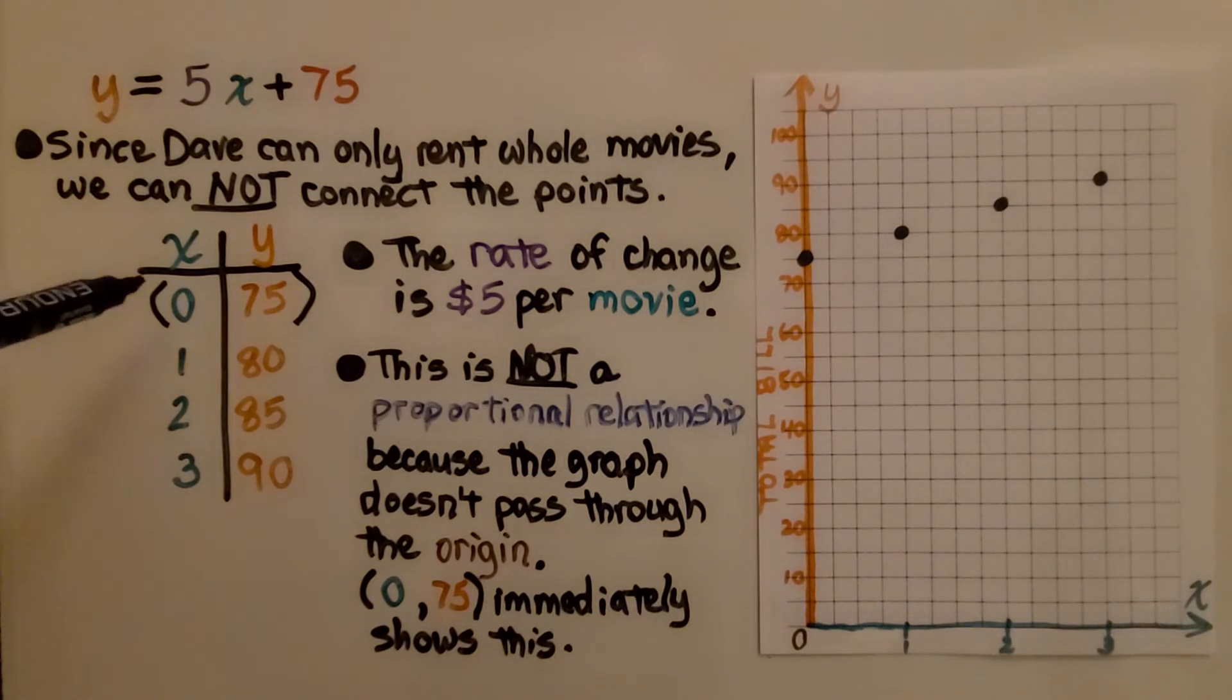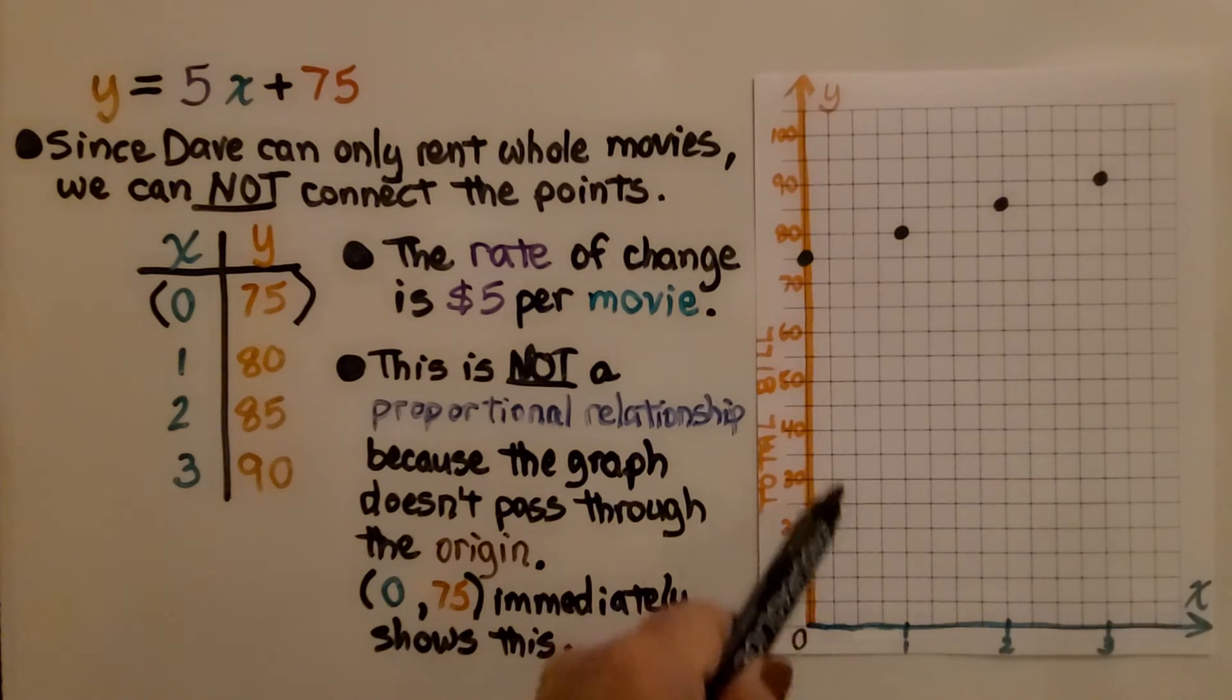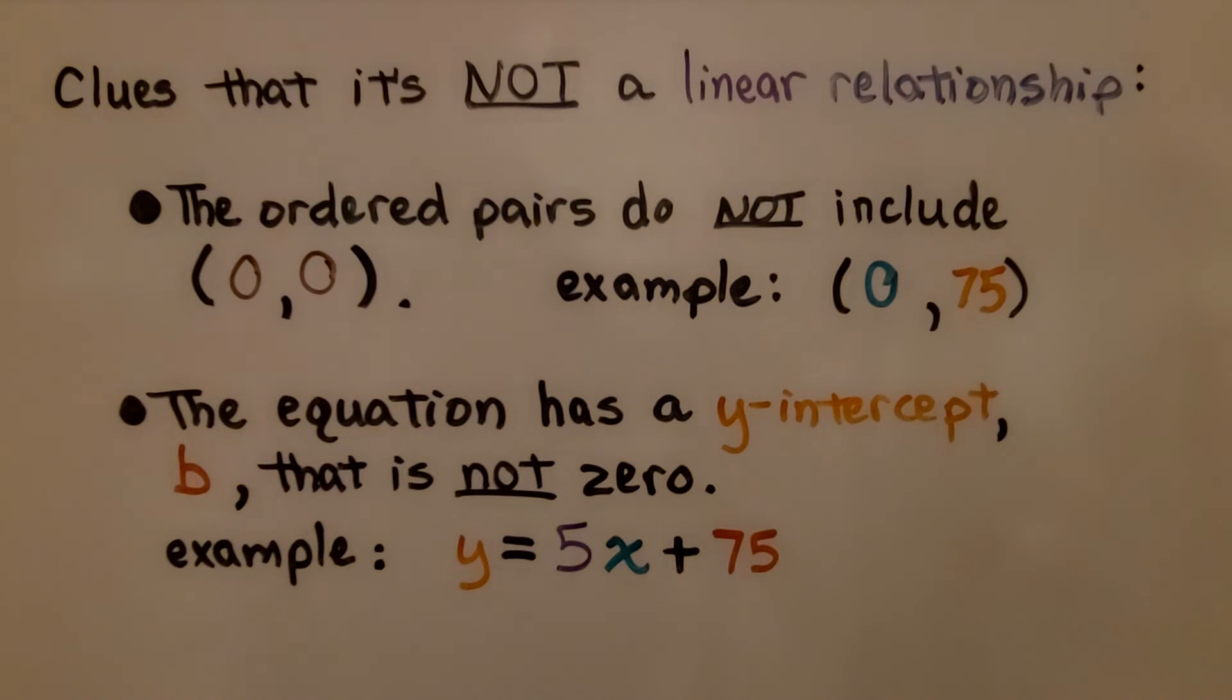This (0,75) immediately shows that this is not a proportional relationship because it shows it's going through 0 for x and 75 for y, not (0,0).